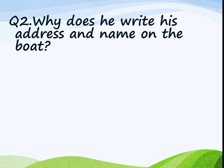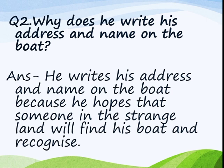Question number 2: Why does he write his address and name on the boat? The poet writes his name and address so that when his boat reaches any strange land, where people would not be aware of him or his village, they would come to know about both things after looking at his boat. We will write: he writes his address and name on the boat because he hopes that someone in the strange land will find his boat and recognize him.